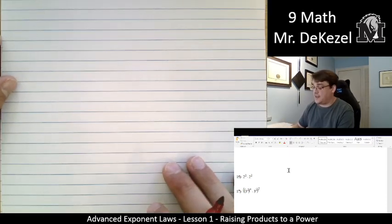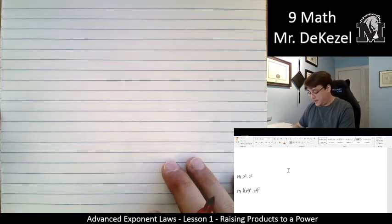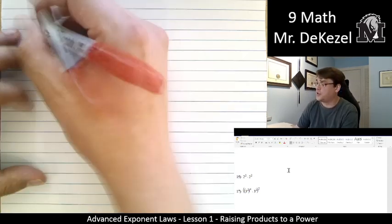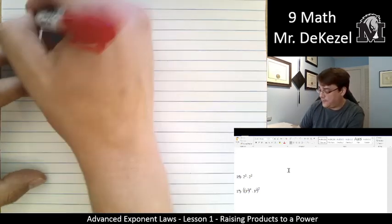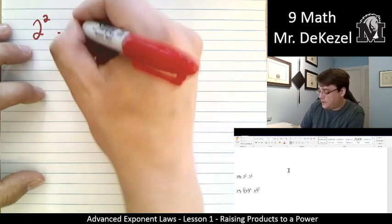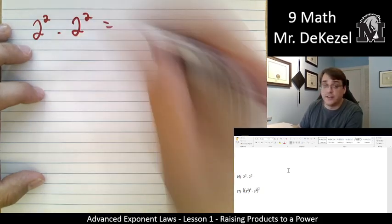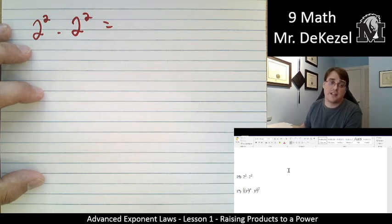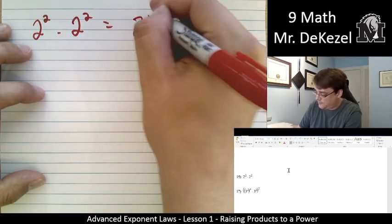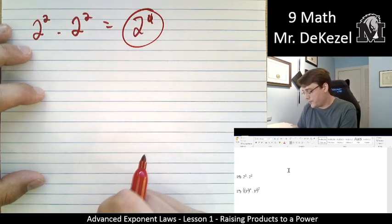This is all going to come with practice. If you have problems at all, ask me to do a whole bunch on the board, or ask a friend — that is the key. We've got 2 to the power of 2 multiplied by 2 to the power of 2. This is a friendly familiar one. We don't have anything to do except add those exponents — 2 to the power of 4.